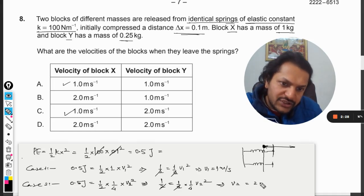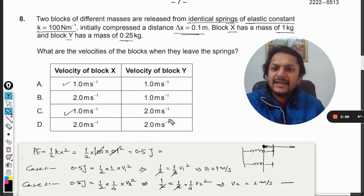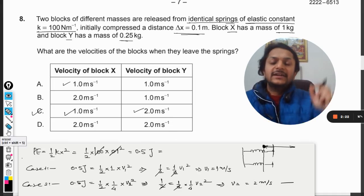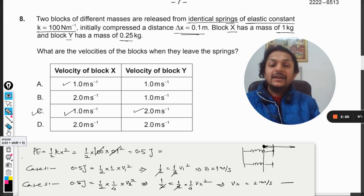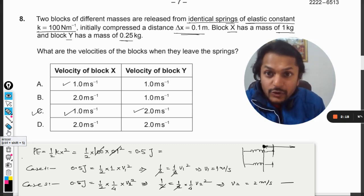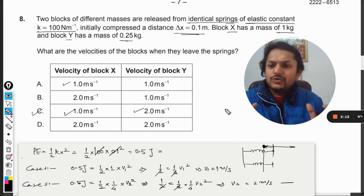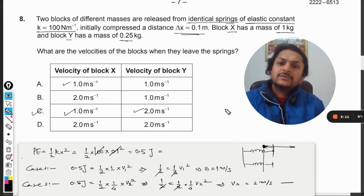We get v2 is equal to 2 meters per second. So our v2 is coming out to be 2, and hence the answer for this question will be C. This is how we do it. I think this question is quite simple. We have just used a simple principle, that is conservation of energy.